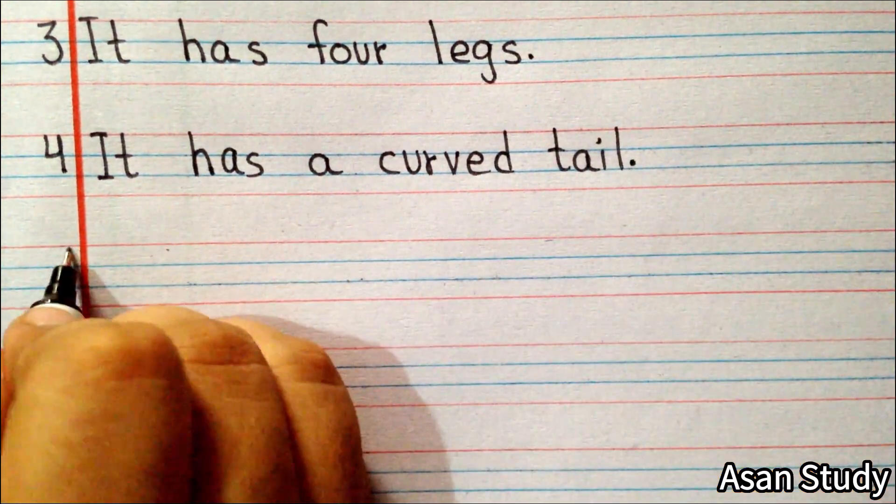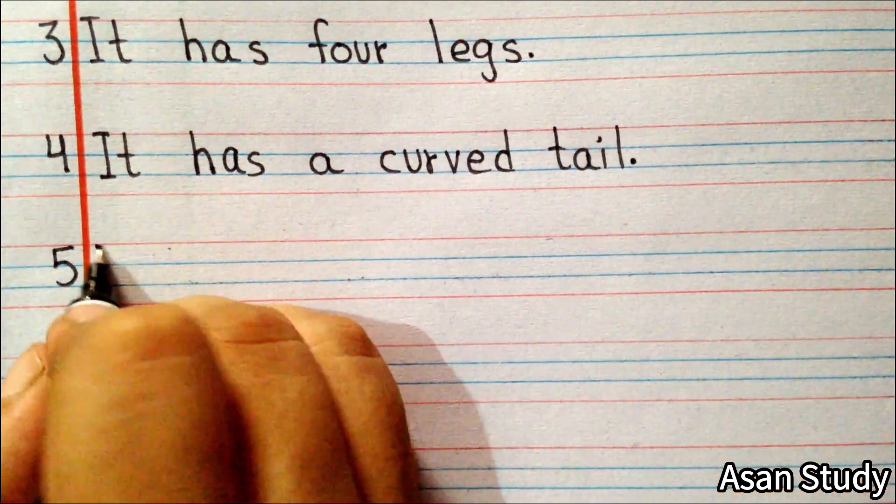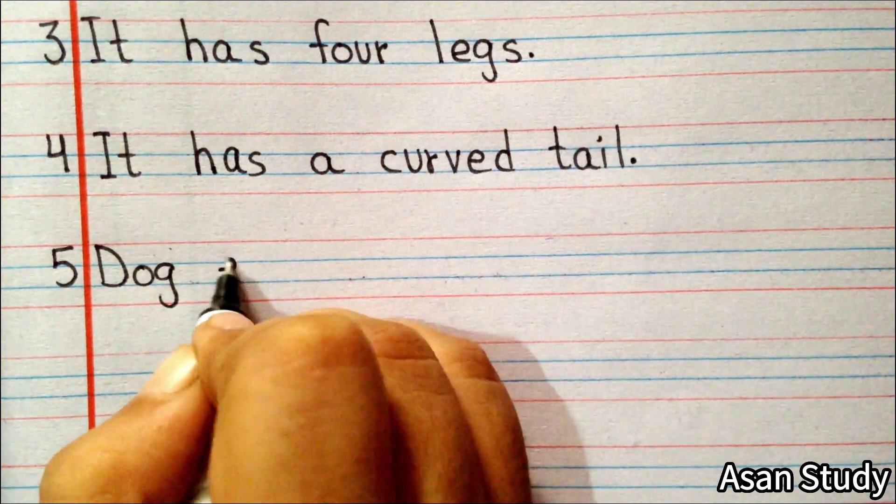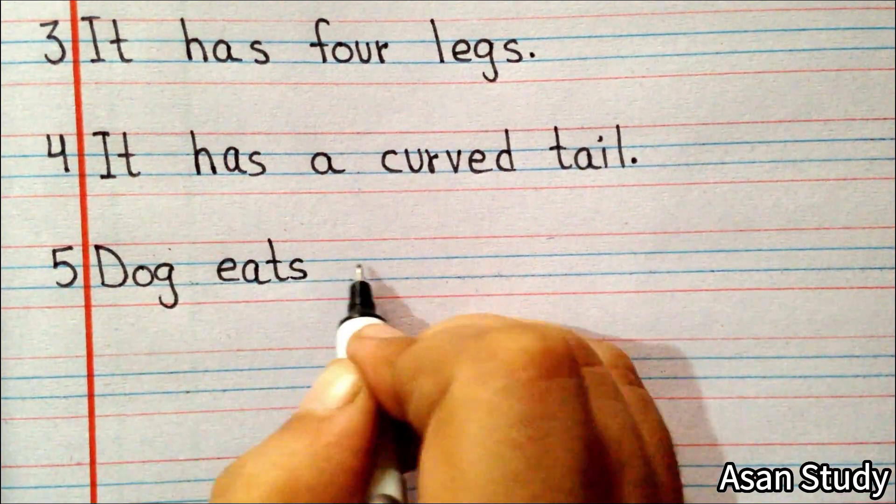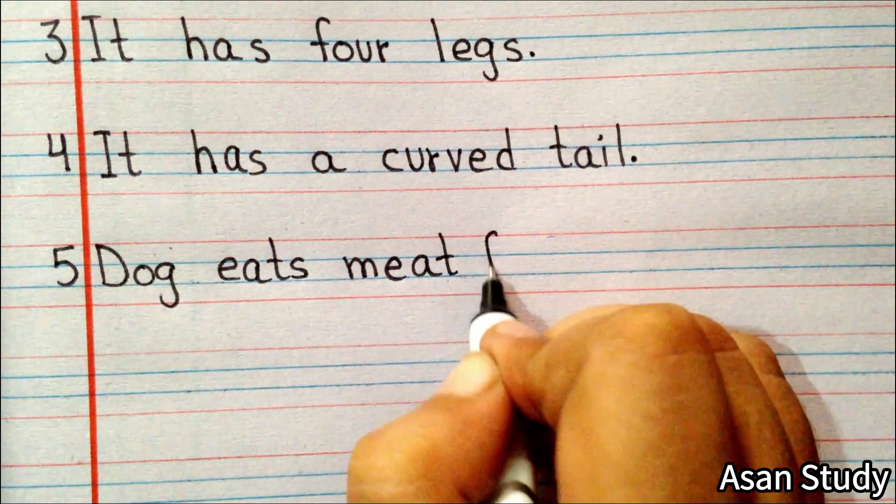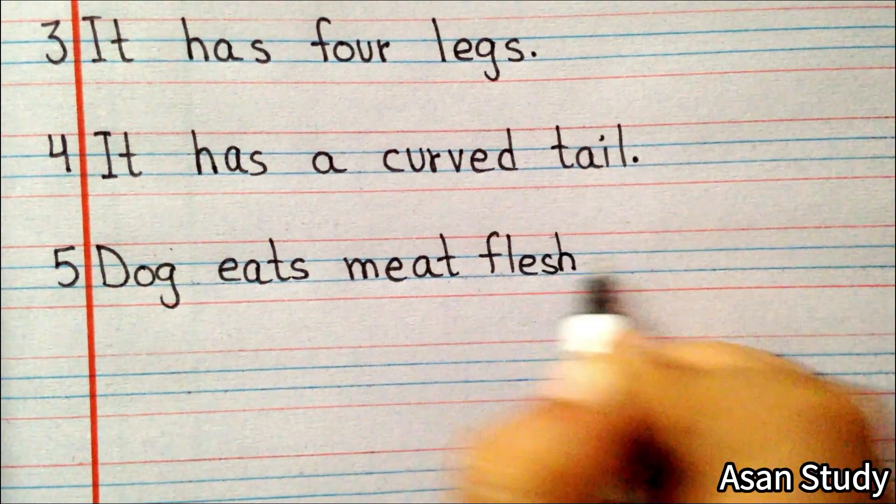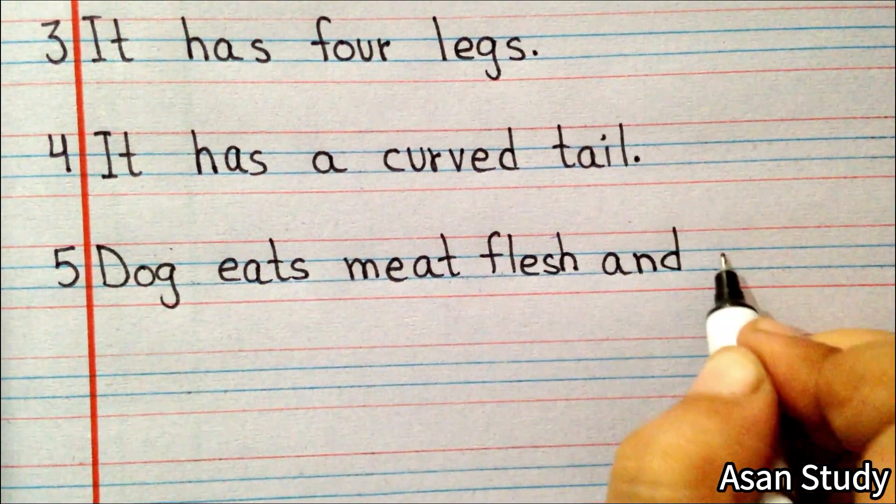Point number 5: Dog eats meat, flesh and plants.